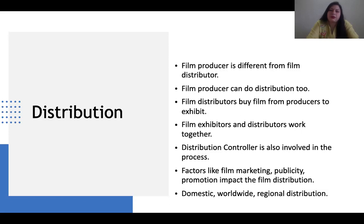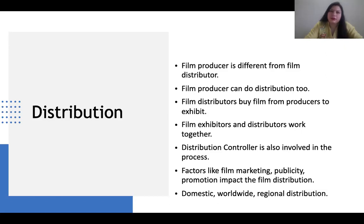There are certain factors that affect film marketing. Publicity and promotion have a higher impact on film distribution prospects — if your film marketing and promotion are done properly, different distributors will be ready to invest in and distribute your film on various platforms. The film is distributed on three different categories: the first is the domestic level, the second is the worldwide level, and the third is regional distribution.